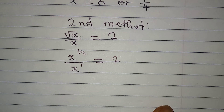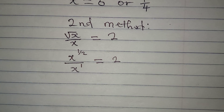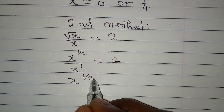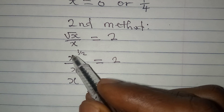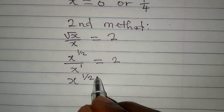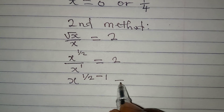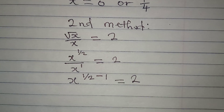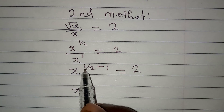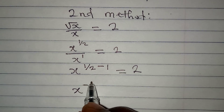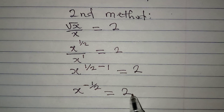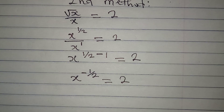If I continue from here, this is the same thing as x to the power of 1 over 2. According to the law of indices, you pick one of the bases and then subtract the powers. So I'll take 1 away from this. This will give me x to the power of 1 over 2 minus 1, which gives negative 1 over 2, and this will now be equal to 2.